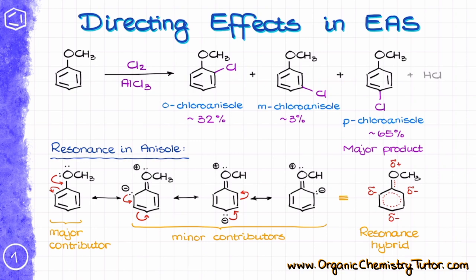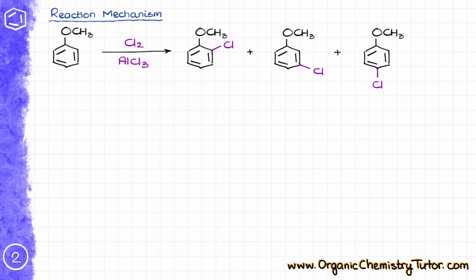Since those positions in our molecule have an excess of electron density, they are going to be more reactive in reactions with electrophiles. In other words, electrophiles, which are electron deficient, will be more attracted to those positions. And since the methoxy group pushes electron density into the ring, making it more reactive with electrophiles, we are going to call groups like that the activating groups. So let's continue our investigation of this reaction and look at the mechanism in more detail.